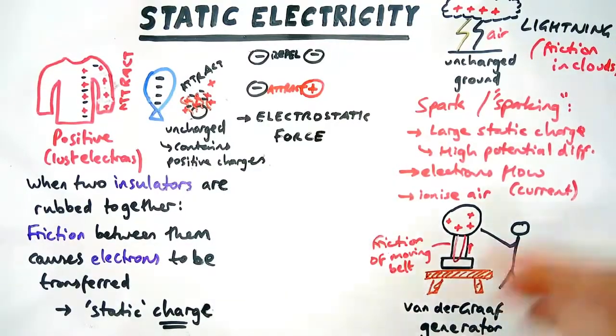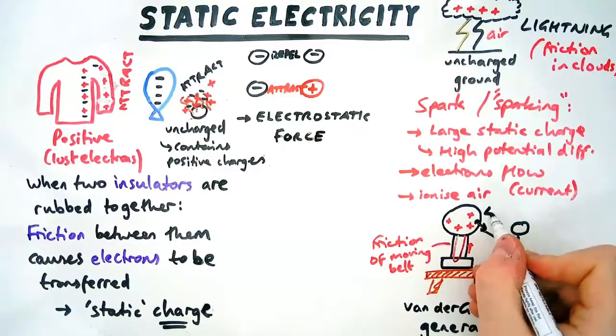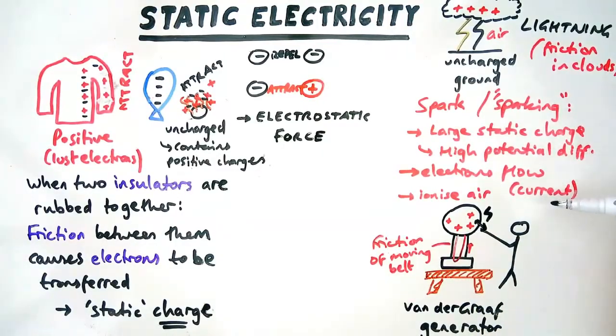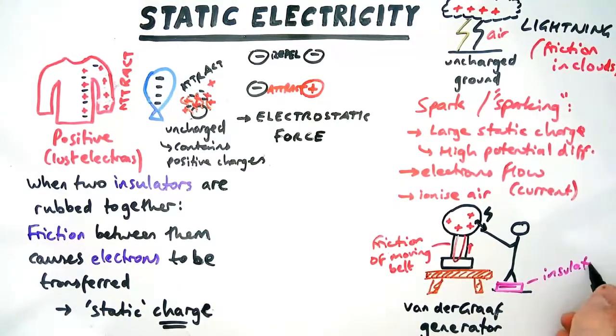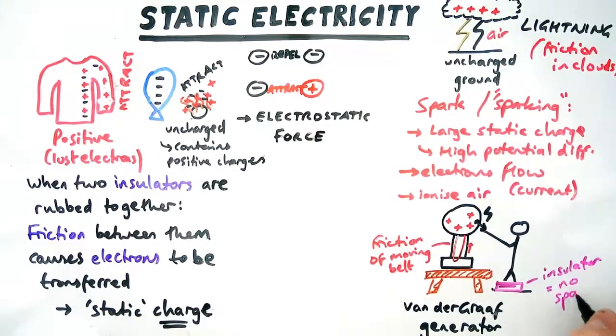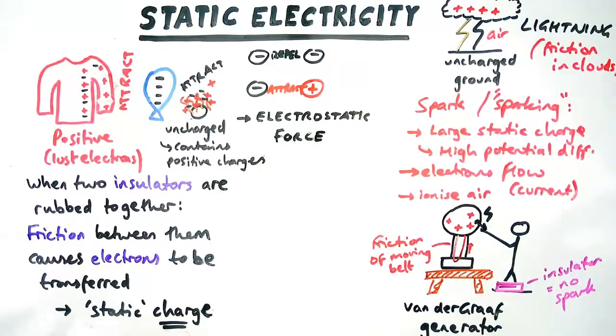Now, when you touch the Van de Graaff generator, a spark will fly. Now, the spark will fly because there's a high potential difference between you and the generator. So the current will flow. Now, this only works if you're standing or connected to the ground. If you are insulated from the ground, you will not experience a spark because the spark will not travel through you to the ground. So if there's an insulator you're standing on, there won't be a spark.